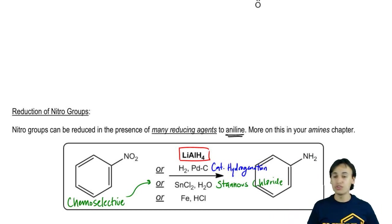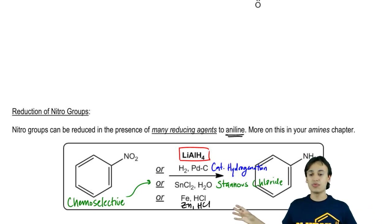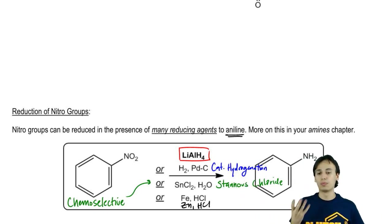Finally, really common reducing agents are either iron or zinc in the presence of HCl. You'll see this all the time. These reagents turn into strong reducing agents that will reduce a nitro group into aniline.